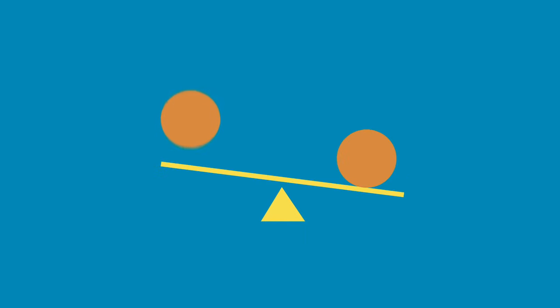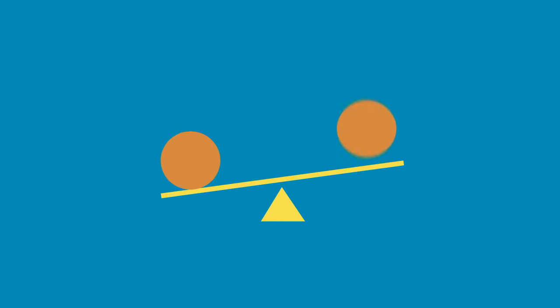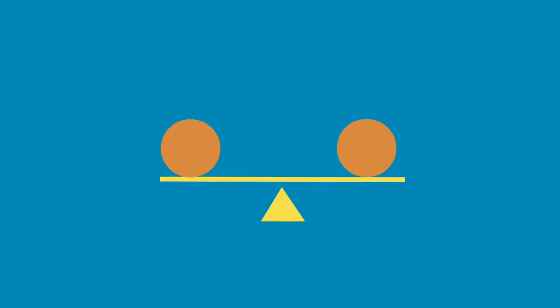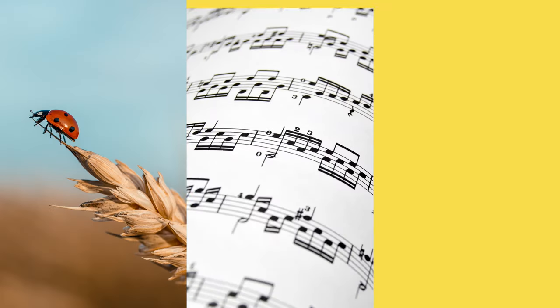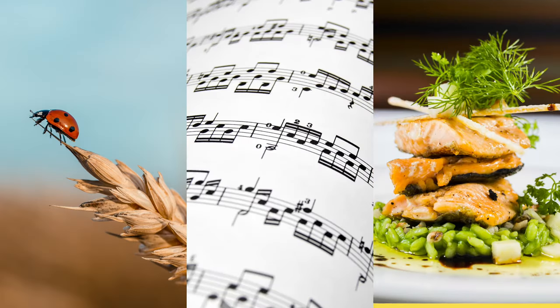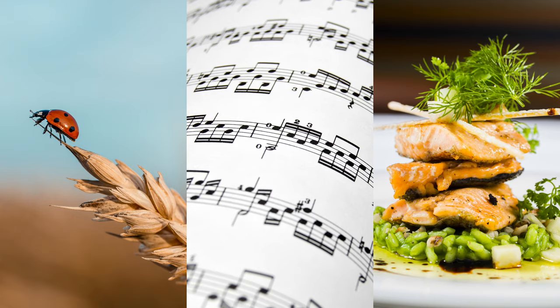Balance. It's when things aren't too big or too small, but just right, making it obvious which elements of an image, or a song, or a plate of food are most important.